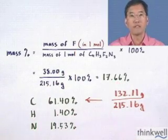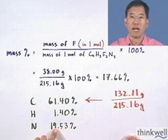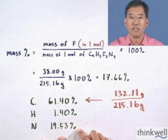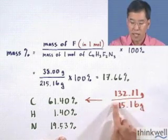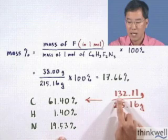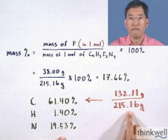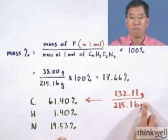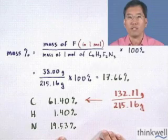You can do this for each one of the elements. We can do it for carbon and hydrogen and nitrogen. I'm going to let you figure out what hydrogen and nitrogen are. But as a hint, for carbon, the way I came up with 61.40 percent is the mass of carbon in one mole is 132.11 grams, and the mass of the whole mole of material is 215.16 grams. When you divide these and multiply by 100 percent, you get 61.40 percent.